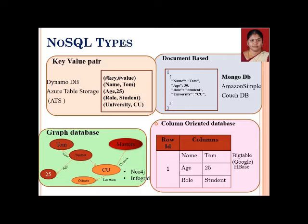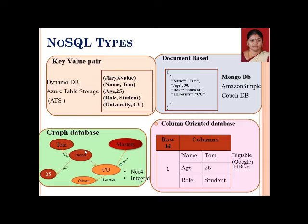The third NoSQL type is graph databases, where you have different nodes representing keys and child nodes representing values. For example, courses have masters and location attributes, and students have course, name, and age. Nodes are connected by links forming a graph. Examples include Neo4j and InfoGrid.